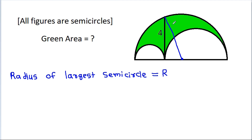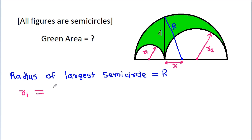This radius is R. Suppose the radius of this semicircle is R1 and the radius of this semicircle is R2. And suppose this length is X. Then R1 will be equal to (R minus X) by 2, and R2 will be equal to (R plus X) by 2.